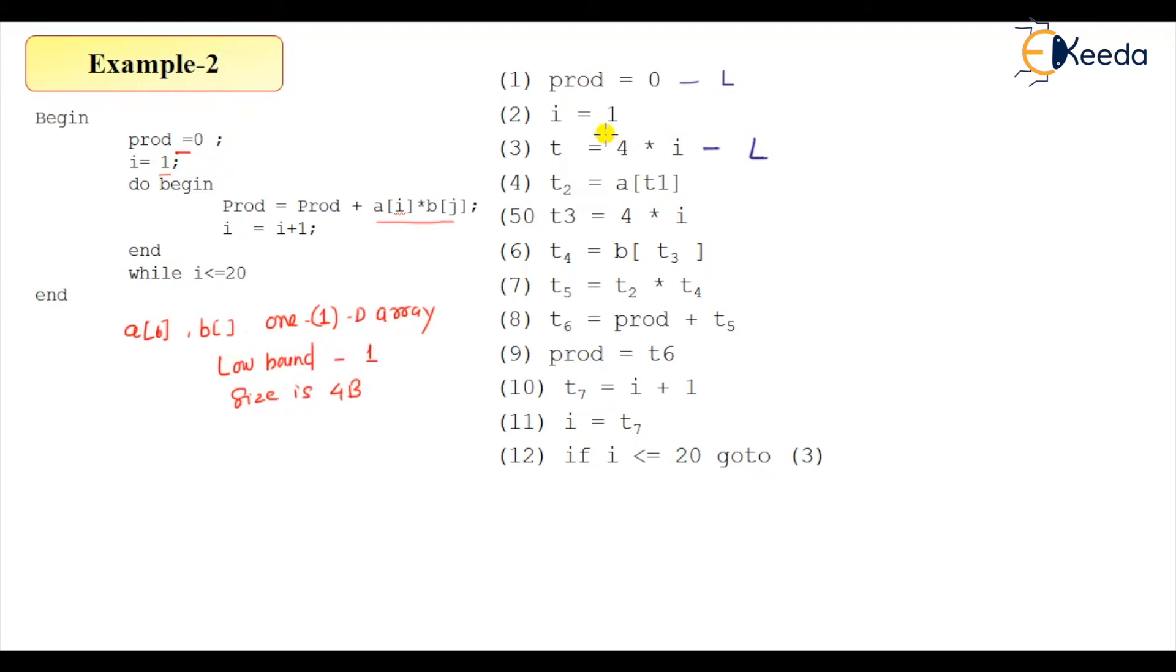And any instruction, also this is the target of the branch instruction. Three is a leader because it's a target of branch instruction. And one is a leader because it is the first instruction.